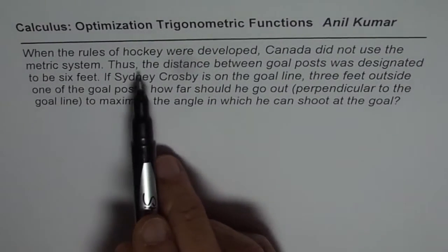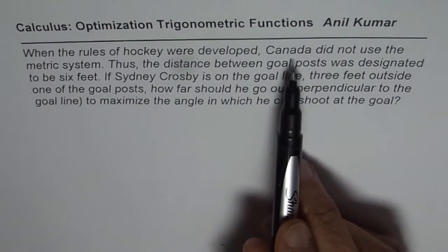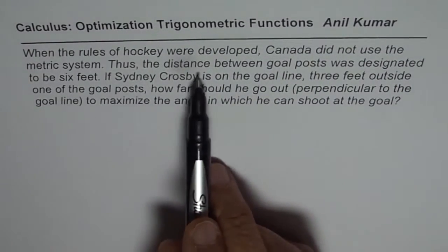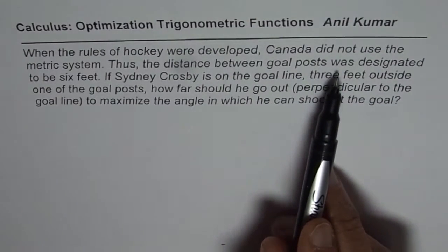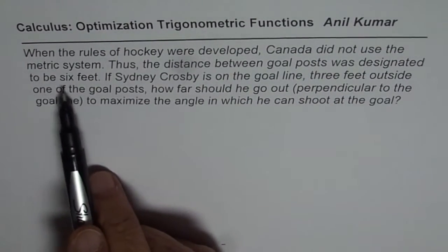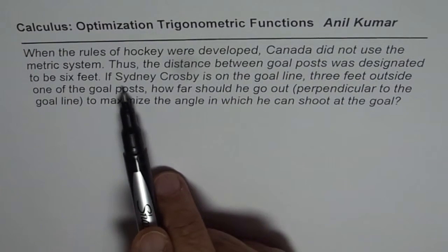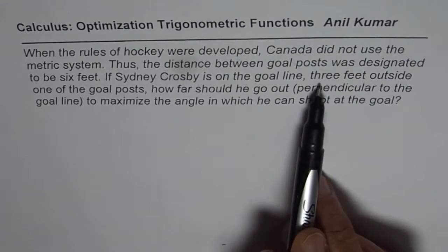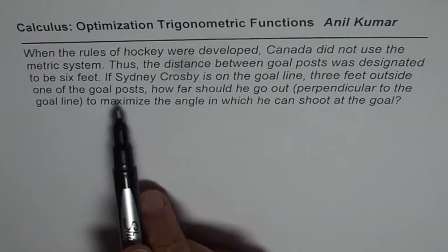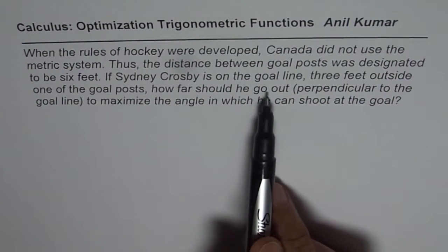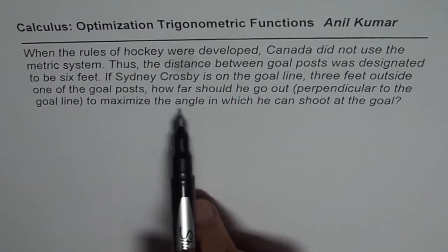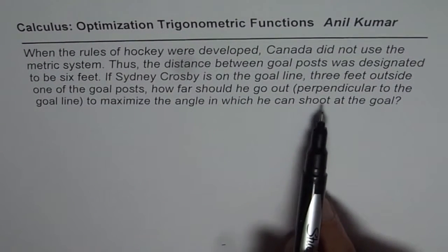When the rules of hockey were developed, Canada did not use the metric system. Thus the distance between goal posts was designated to be 6 feet. If Sidney Crosby is on the goal line 3 feet outside one of the goal posts, how far should he go out perpendicular to the goal line to maximize the angle in which he can shoot at the goal?